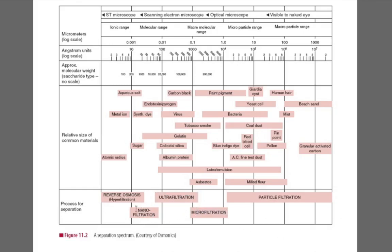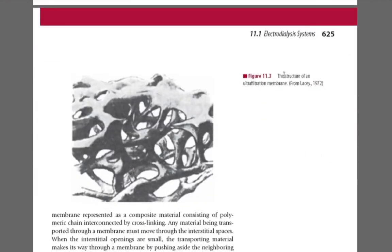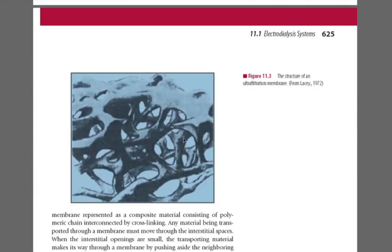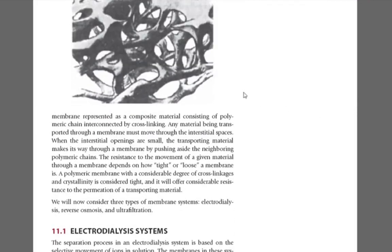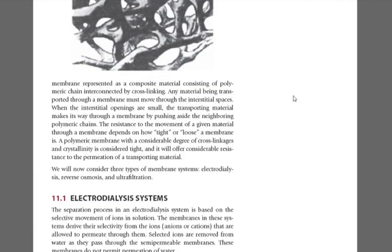There is an overlap in the ranges in which these processes work. Reverse osmosis overlaps with nanofiltration, nanofiltration overlaps with ultrafiltration, and ultrafiltration overlaps with microfiltration. Conventional particle filtration handles the remaining range. The structure of an ultrafiltration membrane shows a 3D mesh structure. There are no straight through-pores; rather, various pores are connected together, so particles must travel through in a zigzag fashion.